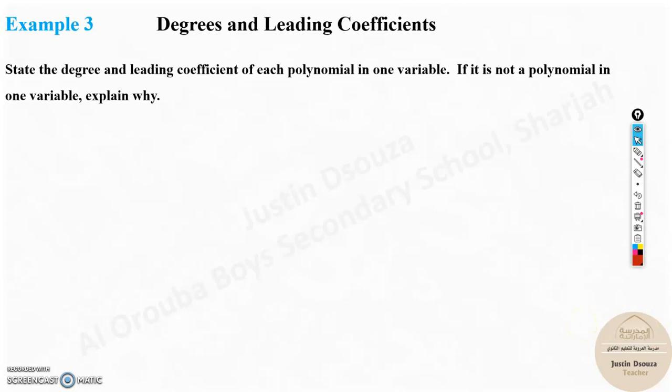Now we will move on to the example problems. I'm starting with Example 3, the reason because degree and leading coefficients is very basic and very important to know thoroughly. Then the other problems will be very easy. So we will start with Example 3 and then move on to the other example problems. State the degree and leading coefficient of each polynomial in one variable. If not a polynomial in one variable, explain why.